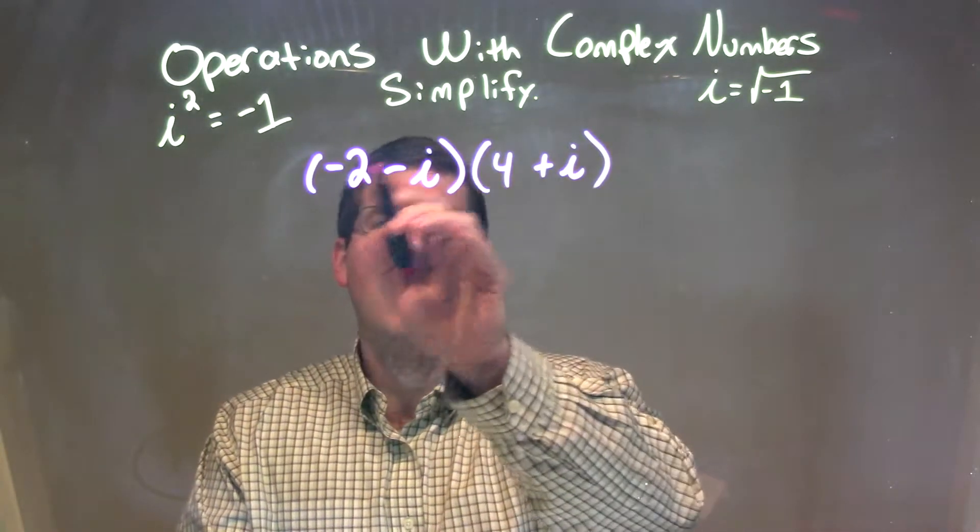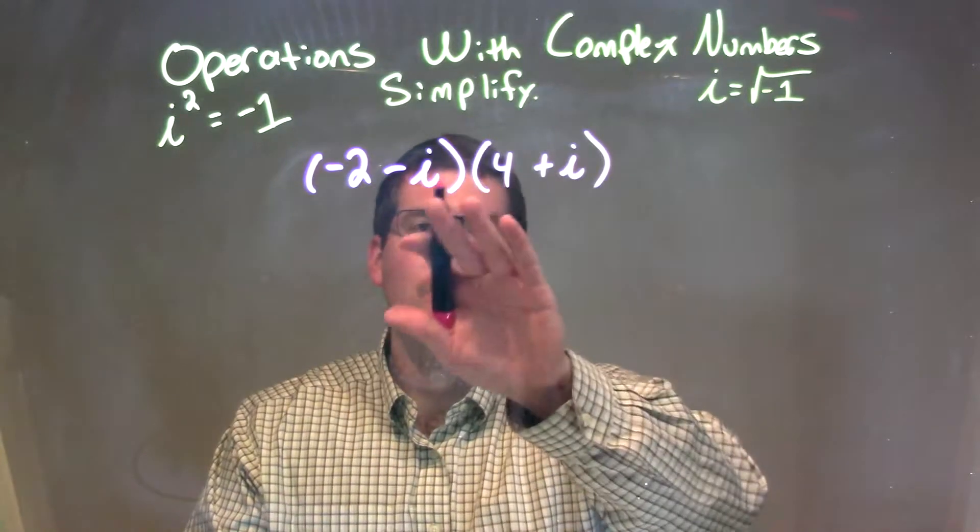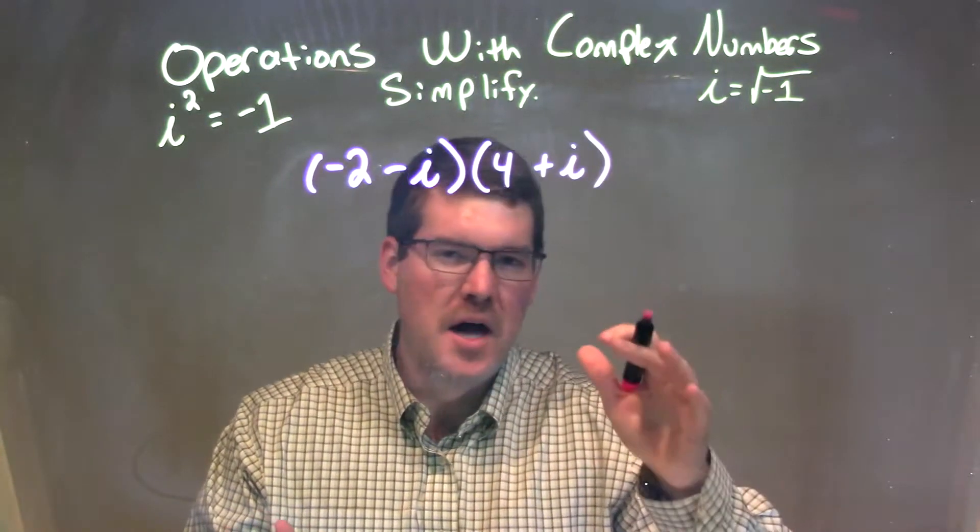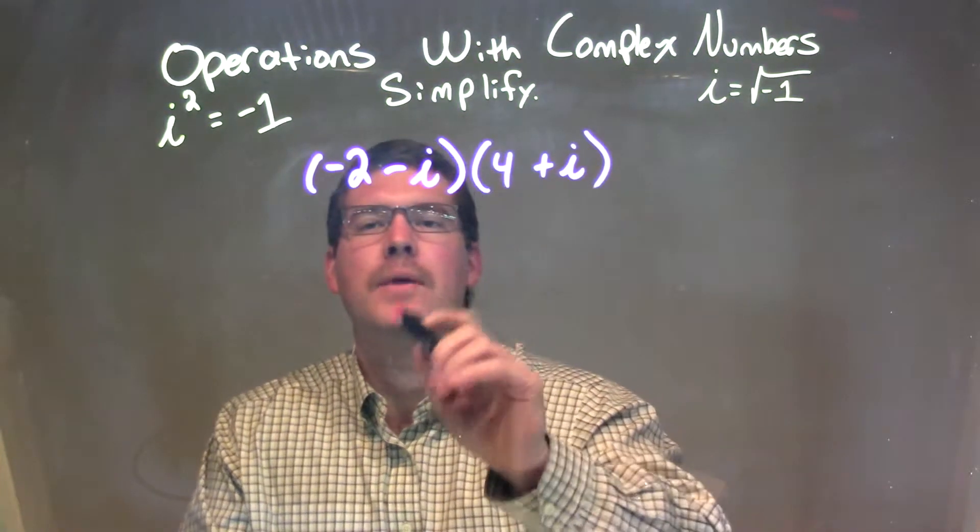We want to distribute this. We want to essentially FOIL, right? And we're going to treat i like it's a variable, kind of. Alright, we'll see where the difference comes. So let's just do that.